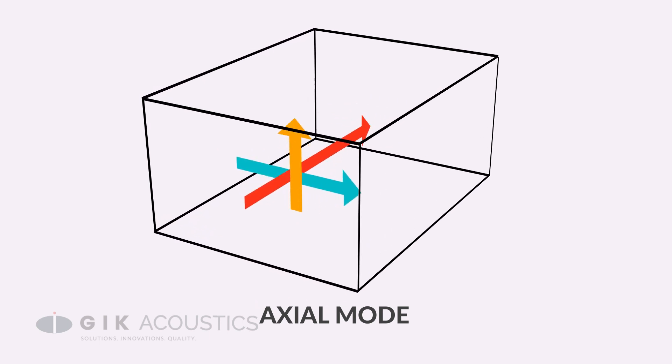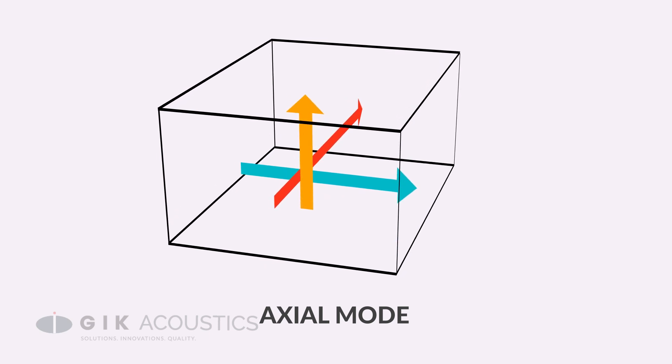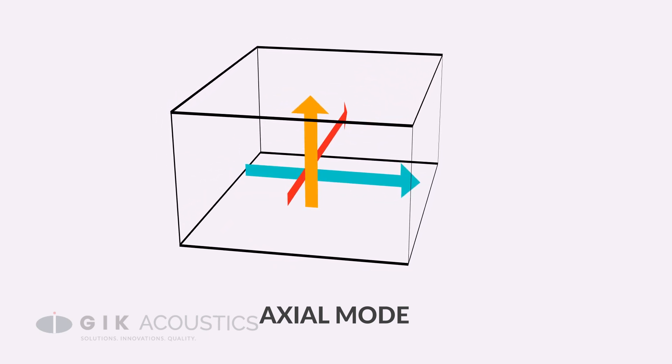In a rectangular room, axial room modes are those frequencies and wavelengths that correspond to the three dimensions of a room. So a rectangular room will have three axial room modes bouncing between parallel walls.